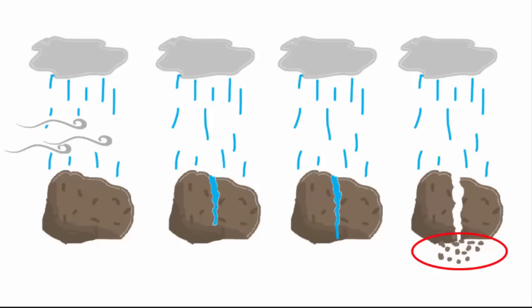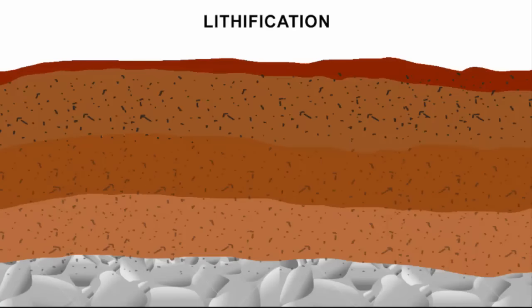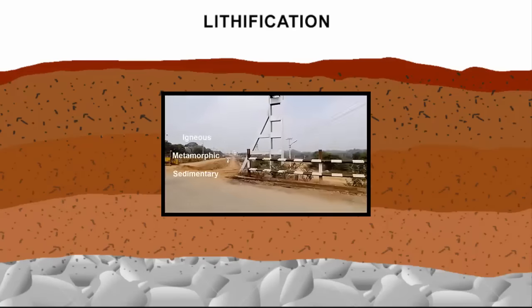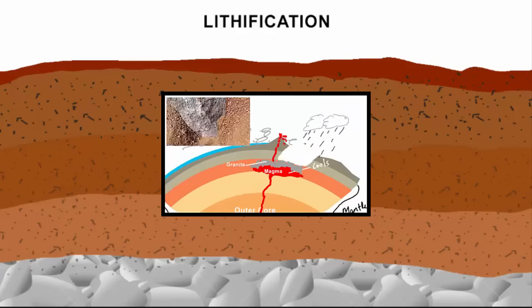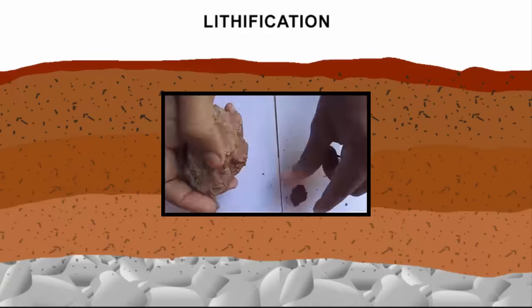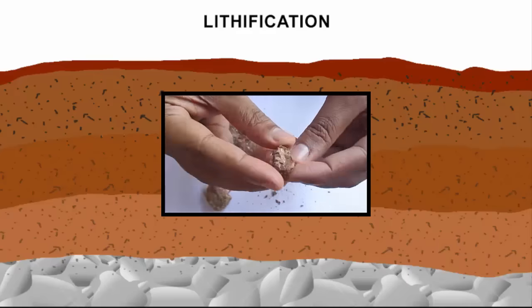And then these small fragments or debris are buried under layers and layers. With time and pressure they cement together into sedimentary rocks and this process is called lithification. I have a video on sedimentary rocks. The link is in the description. In that I have explained how a sedimentary rock breaks into smaller chunks or debris and when you see those debris you can easily relate what I'm talking about.